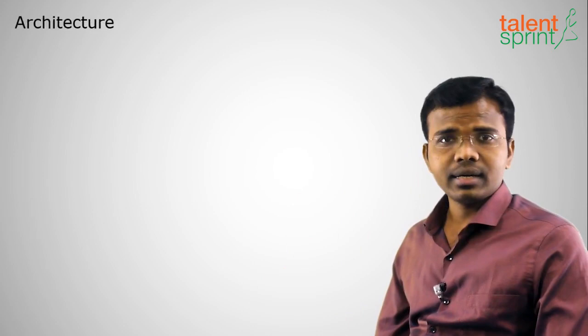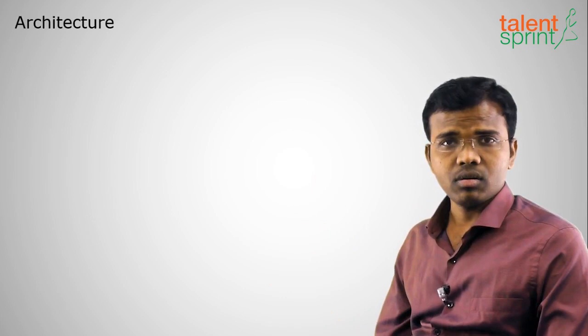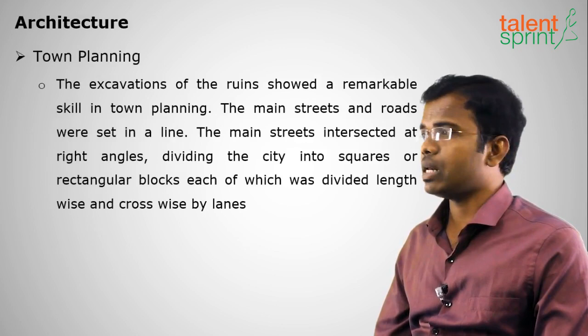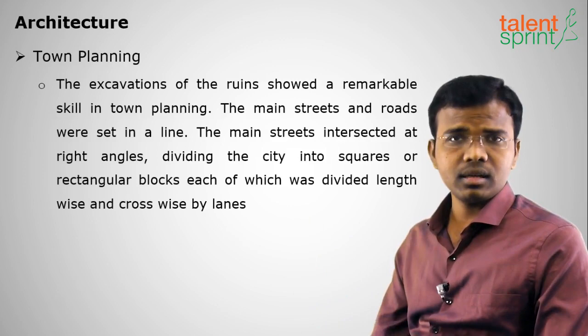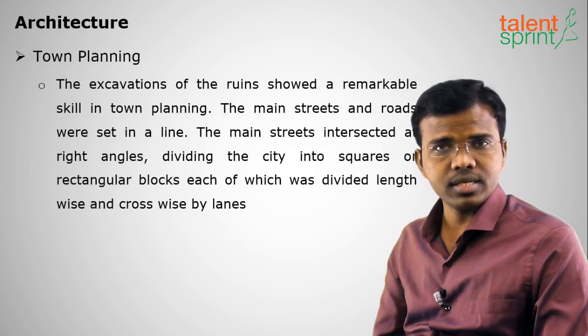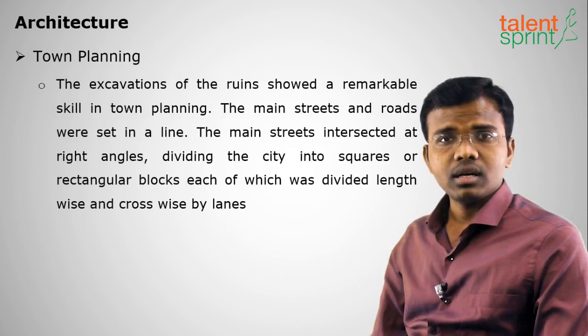Now we shall discuss the architecture of Indus Valley people — how they used their knowledge to build various structures. First is town planning. They had a well-laid town plan where all houses were rectangular and streets ran at 90 degrees to each other, similar to the grid layouts seen in western countries. The upper or kingly class used to live in a place called the citadel.